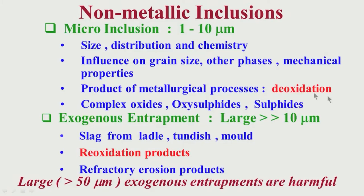Let me recapitulate what I had discussed in the earlier session. I was covering non-metallic inclusions, known as NMIs. There are two basic distinctions. One is the micro inclusion, where the size is less than 10 micron — more or less 1 to 10 micron range. These are essentially products of metallurgical processes, for example, deoxidation. Whatever inclusions are generated through deoxidation, we call them indigenous non-metallic inclusions, and they are smaller in size in the range of 1 to 10 micron.